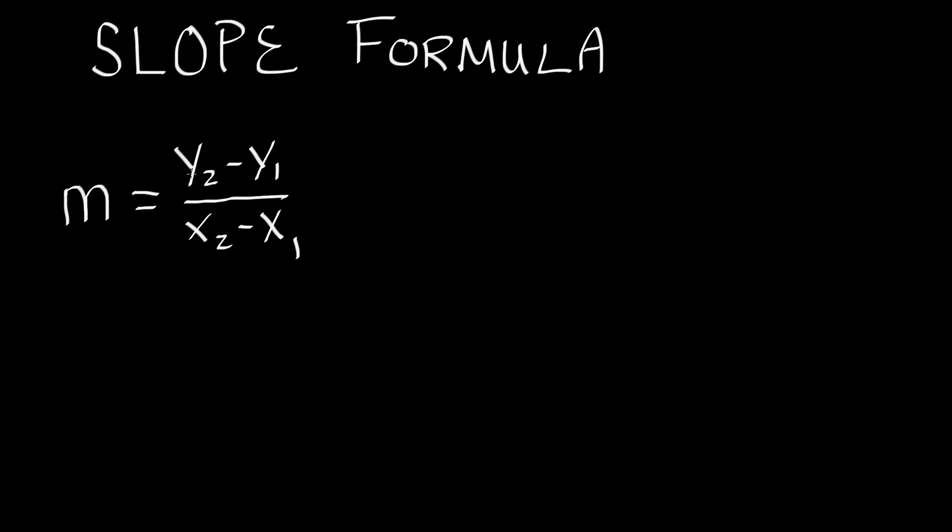So what in the world is y2, y1, x2, x1? Where did those values come from? Basically y2 and y1 and x2 and x1, those are going to be components of the two points that we're going to use.